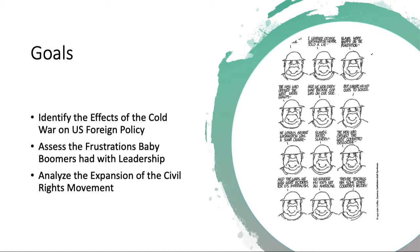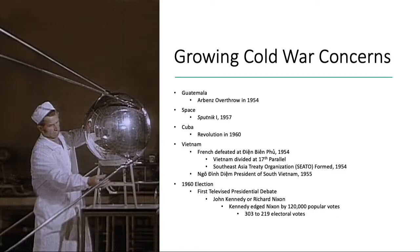The title comes from a Jules Feiffer cartoon from 1970. In it, you see a construction worker talking about his children who are going to college and learning a different type of history. The construction worker says he learned that George Washington never told a lie, slaves were happy on the plantation, the men who opened the West were giants, and we won every war because God was on our side. But where his kid goes to school, he learns that George Washington was a slave owner, slaves hated slavery, the men who opened the West committed genocide, and the wars we won were victories for U.S. imperialism. He concludes: 'No wonder my kid is not an American — they're teaching him some other country's history.' So let's look at some of the changes that might have made people feel this way in the 1960s.